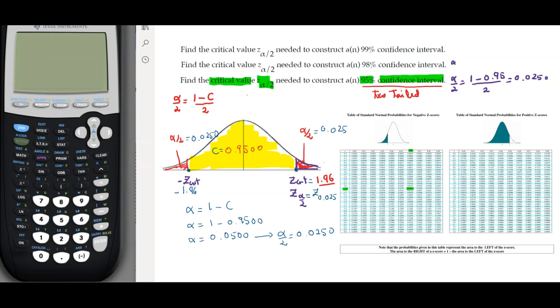For the 98 percentile, the alpha over 2 is 1 minus 0.98 divided by 2, which is 0.01. For 99%, the alpha over 2 is 1 minus 0.99 divided by 2, which is 0.0050.